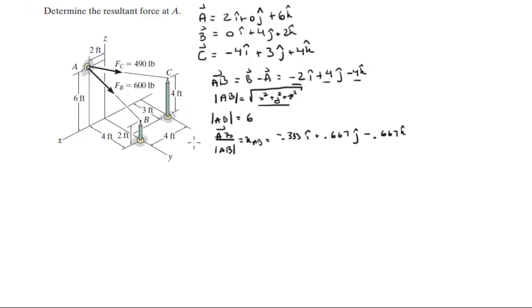Now that you have the unit vector AB which is this vector right here you can multiply by the magnitude of FB to find the Cartesian vector form of FB.